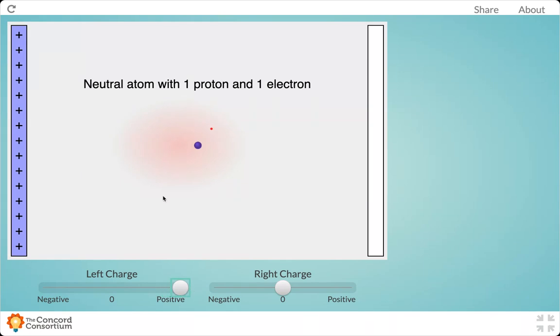What you should notice is that the negatively charged electrons from that electron cloud are attracted to this positively charged plate. We say there's a shift in the electron cloud towards the positively charged plate.